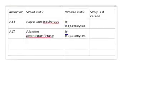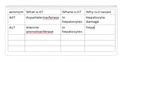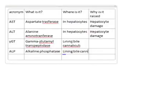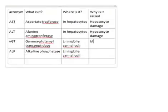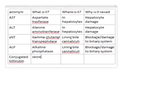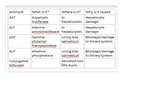To summarise the liver function tests: the aminotransferases AST and ALT sit in the hepatocytes, and if raised they indicate hepatocellular damage. The bile canalicular enzymes gamma-GT and alkaline phosphatase, if raised, suggest blockage in the biliary system or toxic damage to those cells. A high conjugated bilirubin in the systemic circulation suggests that conjugated bilirubin being secreted into the bile ducts is backing up due to a blockage.